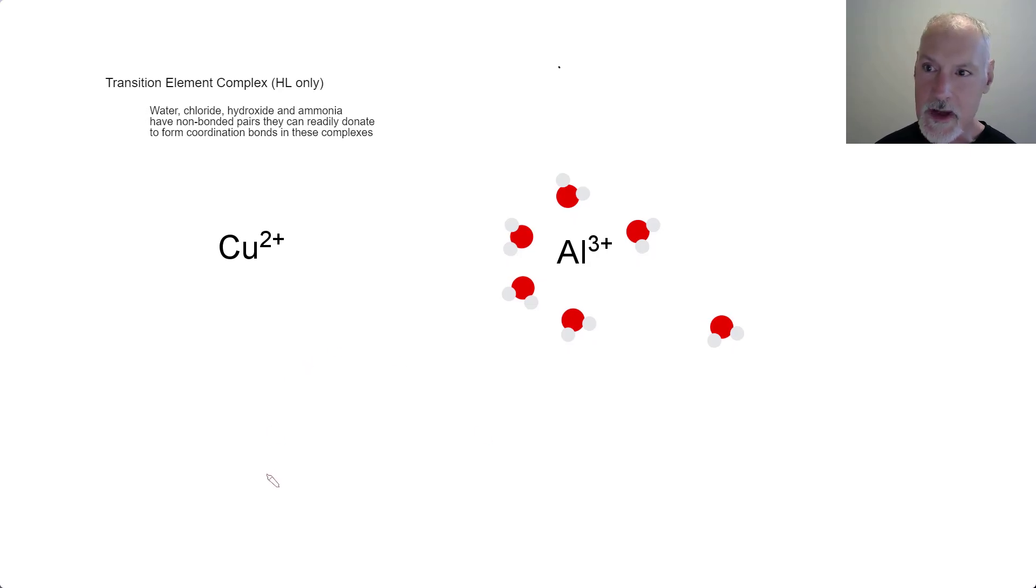Coordination bonds also make an appearance with transition element complexes. So here I have a transition element, copper with a plus two charge. Take a look at say a chloride ion for a moment. So Cl possessing a negative charge. That means it has one more valence electron than normal. So it has seven plus that one, eight electrons.